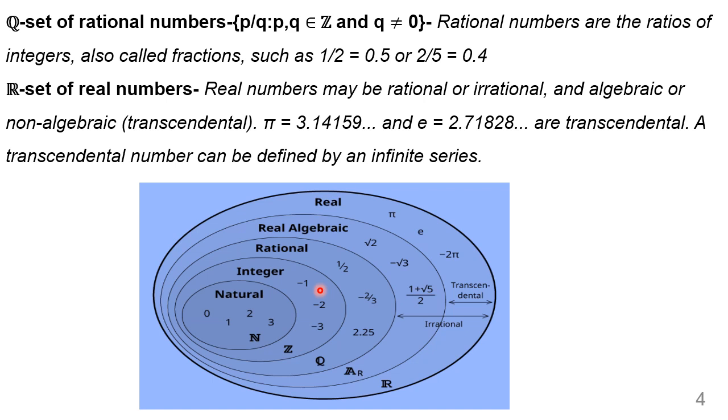So real numbers consist of all kinds of numbers: natural, integer, rational, irrational, real algebraic, and non-algebraic. All these values are contained in R.